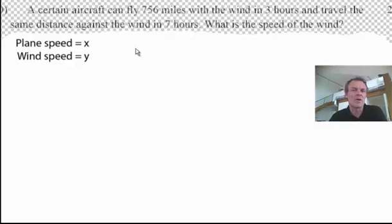So if you think about this, if I do a little diagram going that way, it's going 756 miles. Now, the speed going with the wind is going to be x plus y. Think about it. That's going with the wind.